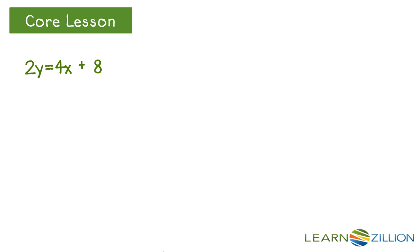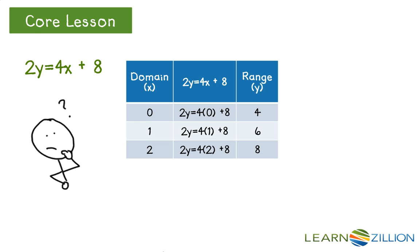Okay, now let's look at an example where we try to determine whether or not a relation is a function when it's written in a form we aren't familiar with. Let's look at 2y equals 4x plus 8. Is this a function? Well, in order to tell if it's a function, we want to determine whether each input only has one output, so we create a table of values.